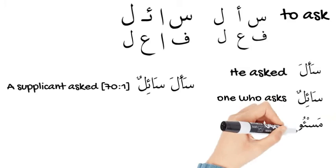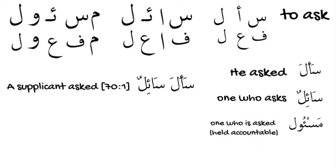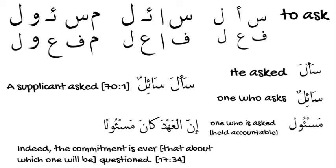مسؤول has the same pattern as مفعول — someone who the verb is being done to, so one who is asked, which also means one who is held accountable. An example is إِنَّ الْعَهْدَ كَانَ مَسْؤُولًا, and the translation is: 'Indeed, the commitment is ever that about which one will be questioned,' meaning everyone will be asked and held accountable about the commitments they've made.